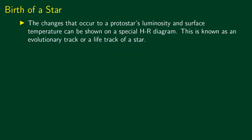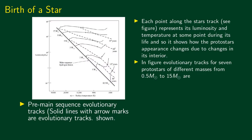We use the HR diagram to track stellar evolution, calling it an evolutionary track. Each point along the star's track represents its luminosity and temperature at some point during its life. The main sequence appears as a line on this diagram. This shows how the protostar's appearance changes due to changes in its interior.